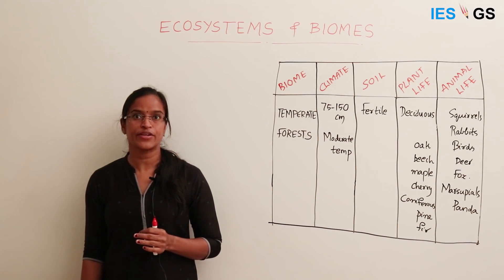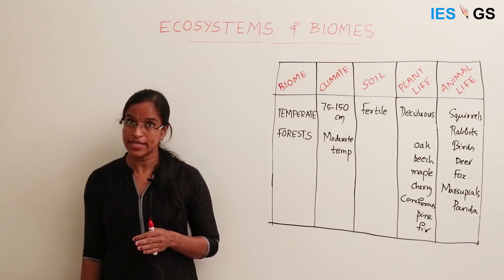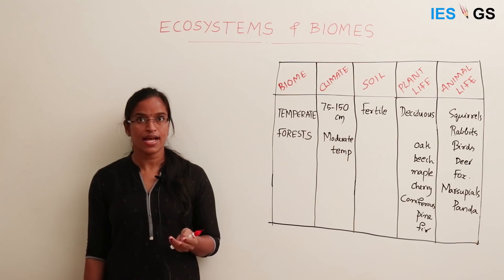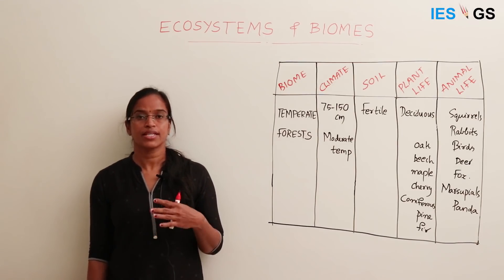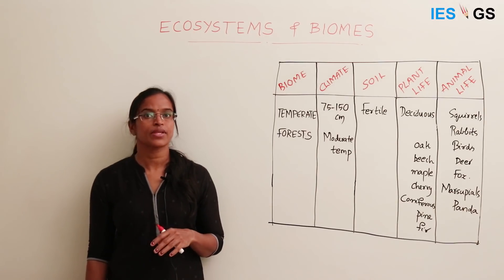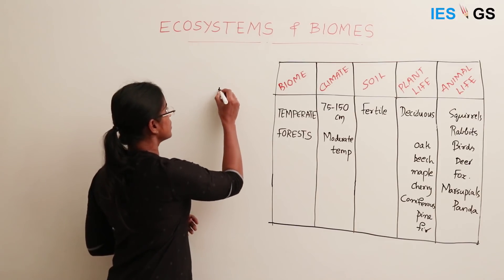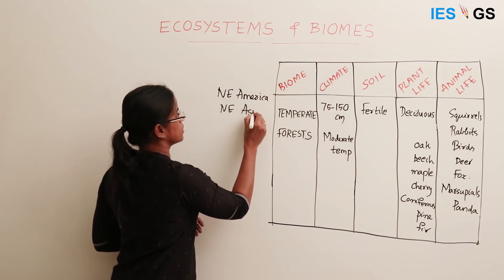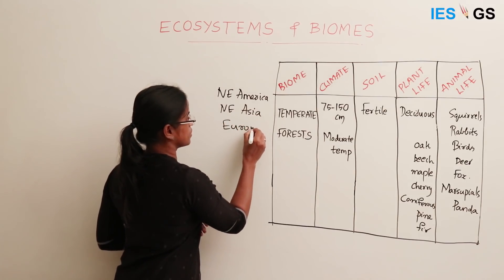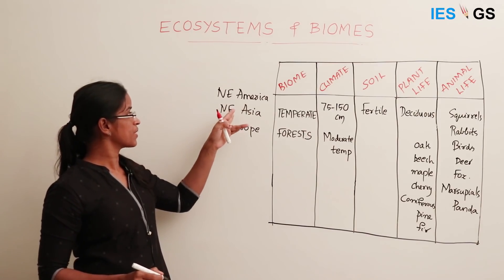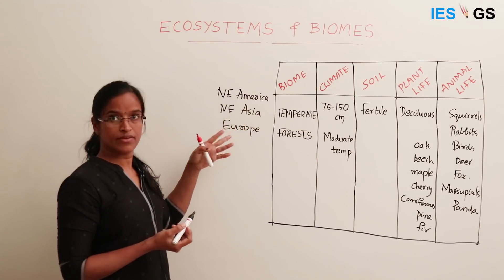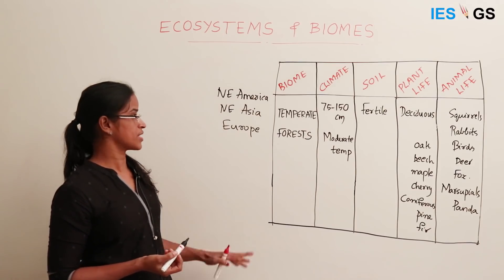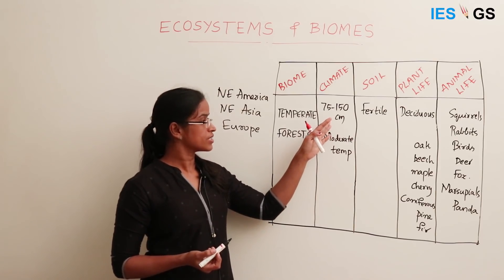Next, let us look at temperate forests. These forests are found in the temperate regions. The word 'temperate' means moderate, so these regions have moderate temperatures, lying between the polar and equatorial regions. Temperate forests are mainly found in north-east America, north-east Asia, and Europe — mainly on the eastern margins of the continents. Western margins will be grasslands; eastern margins receive higher precipitation. The precipitation range is 75 to 150 centimeters.